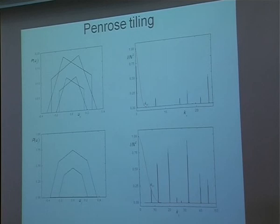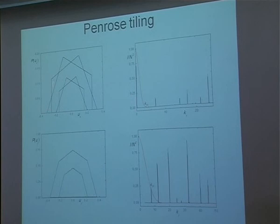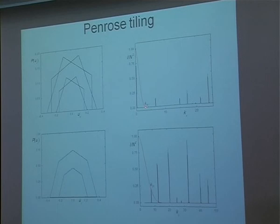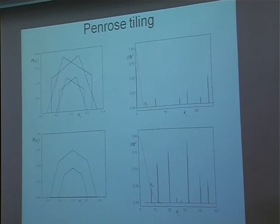Now comes the Penrose tiling. For Penrose tiling, the distribution is more complicated, because as we have seen, in high dimension the atomic surface consists of four pentagons — two big and two small. When you take the projection, the distribution looks more complicated. But still if you use, for example, a K vector along the x direction, there is almost no intensity — very, very low — but it is still enough to describe all the periodic series of the diffraction peaks.